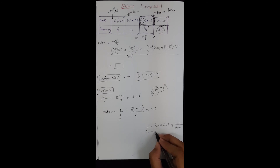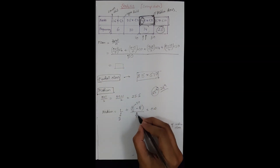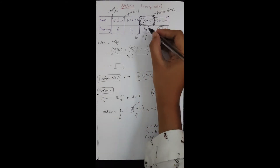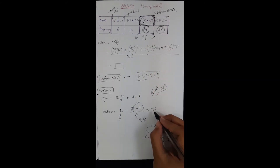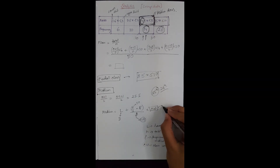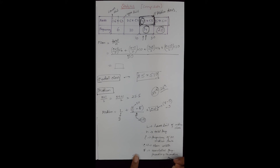N is the total frequency, so N equals 50. Small f is the frequency of the median class — our median class is 5 to 8, so small f equals 14. CW is the class width, which is the size of the median class interval: 8 minus 5 equals 3.